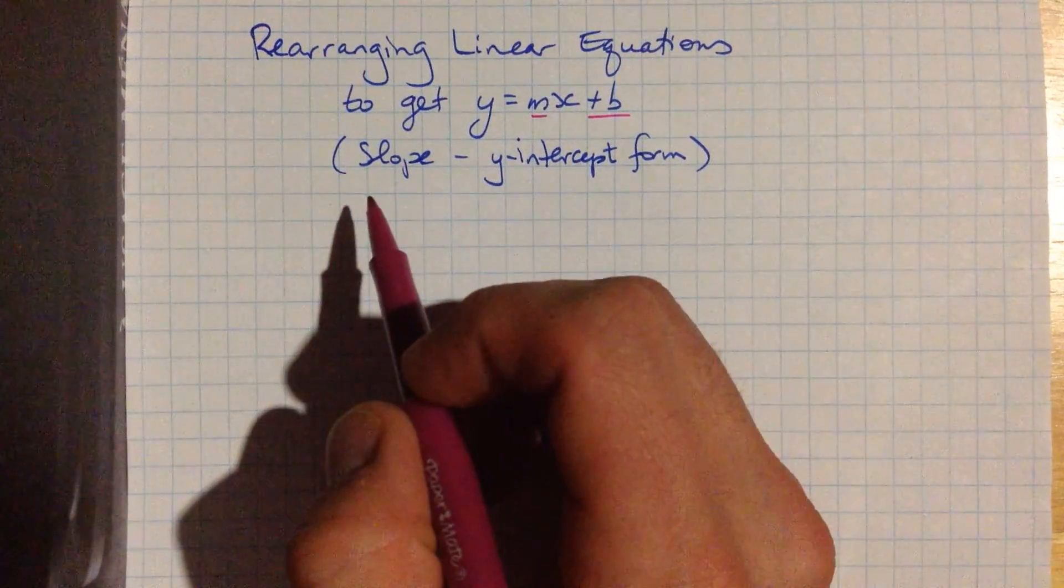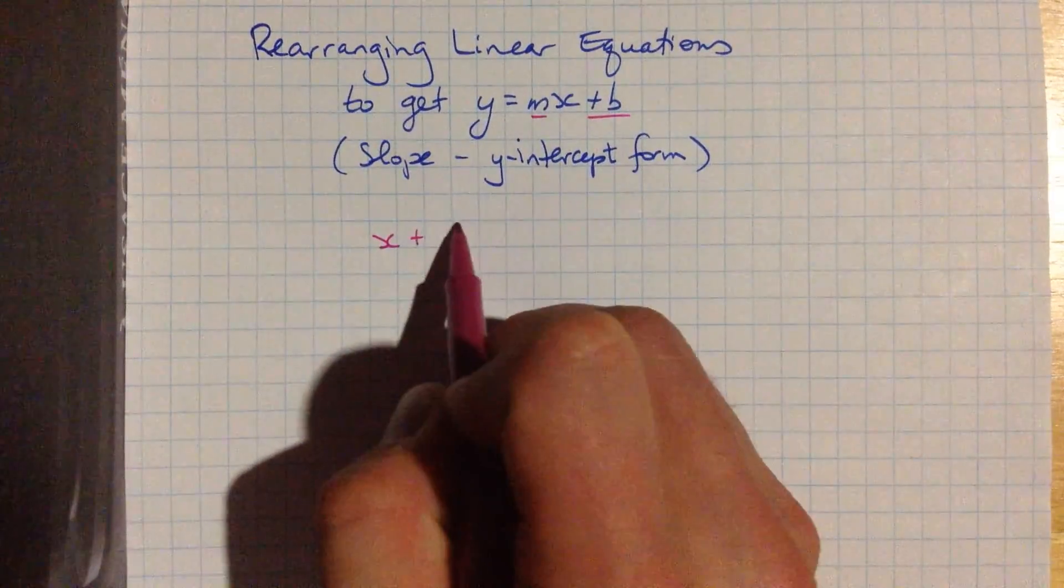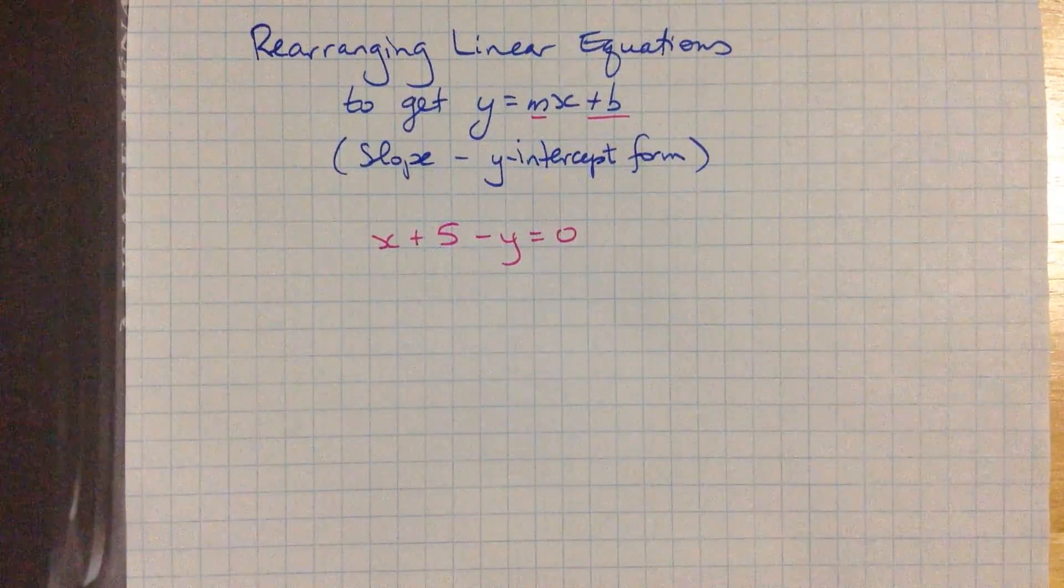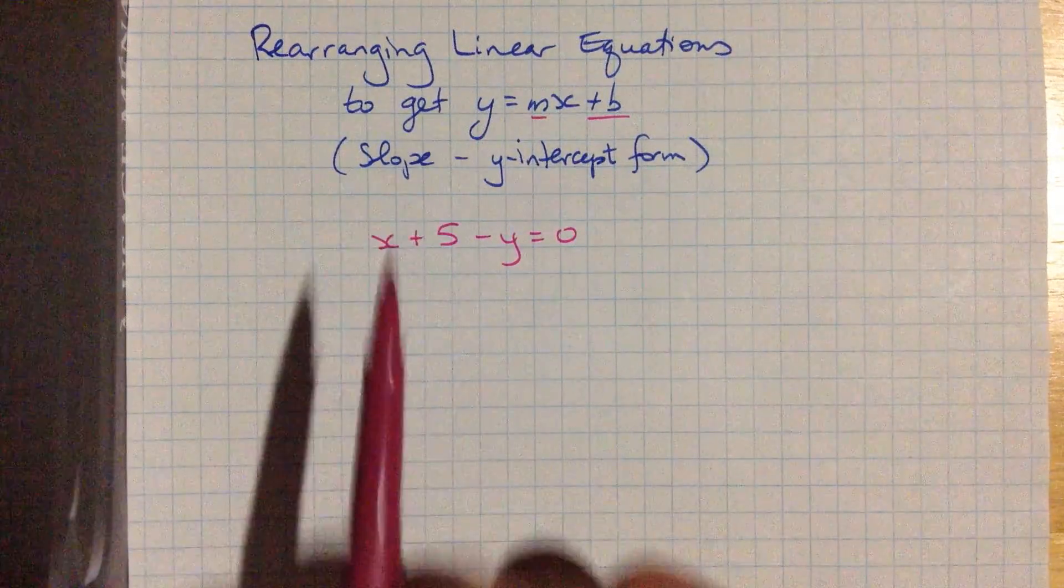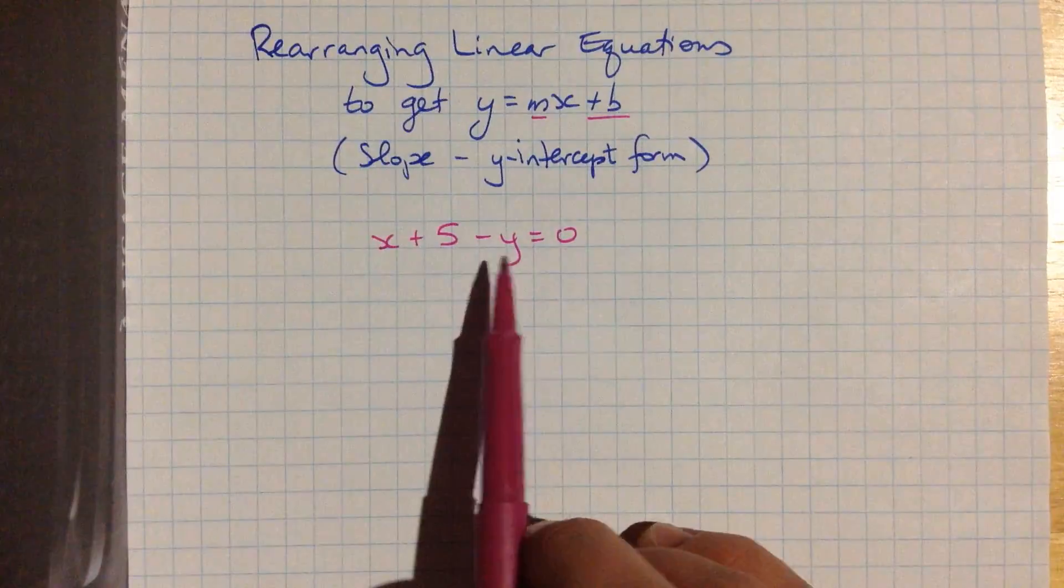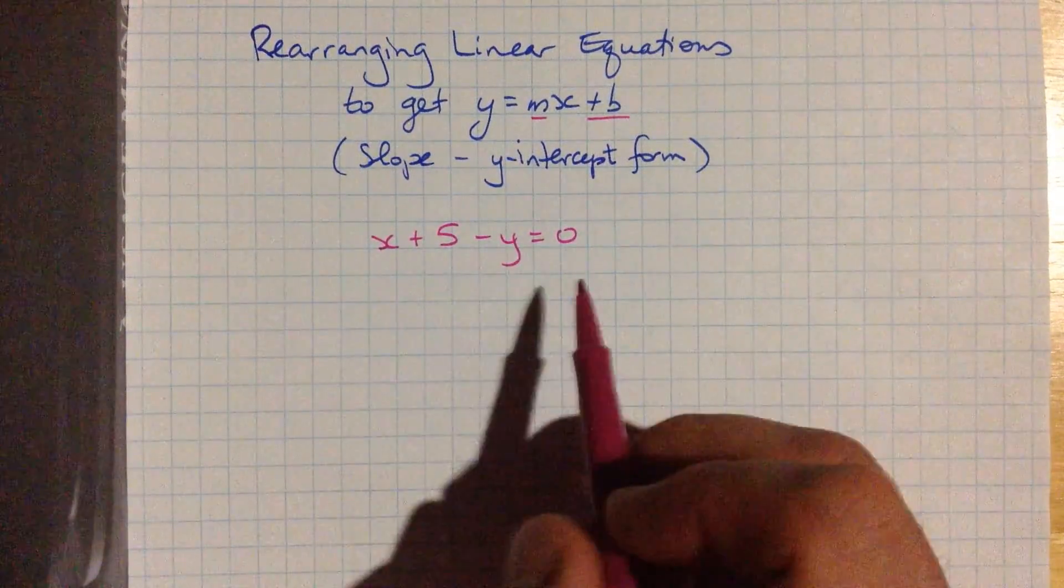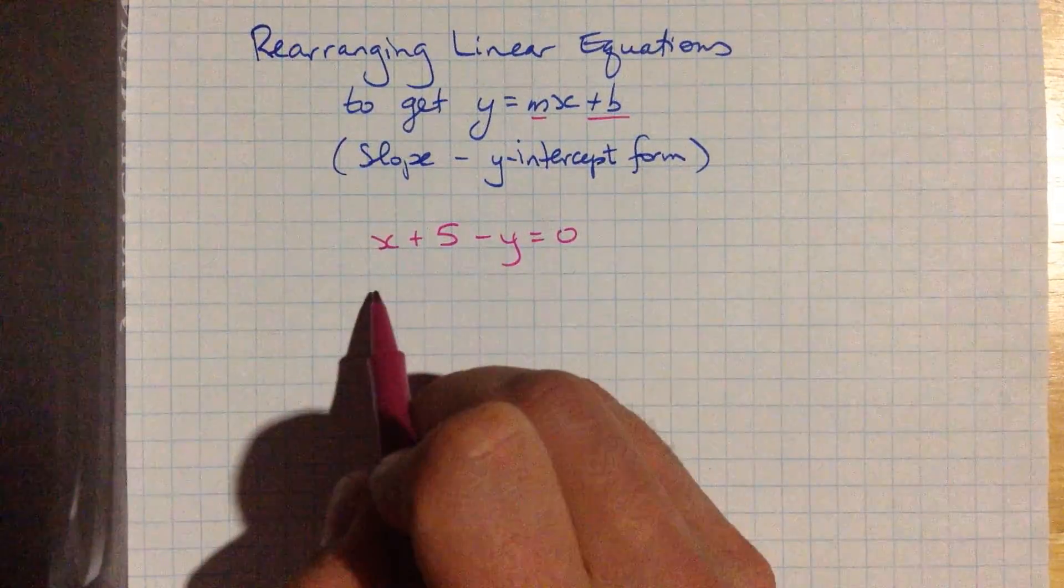So let's start with a fairly small example. I have x plus 5 minus y equals 0. Now the point is to have y by itself, and we typically will write it on the left-hand side. So we've got a couple of options here. I'm going to first off reverse everything, putting y kind of over onto the right-hand side.